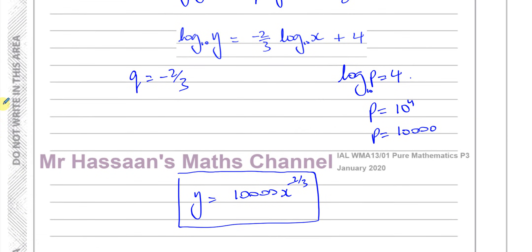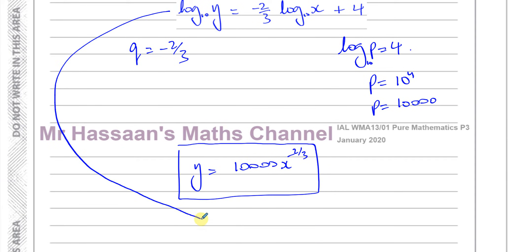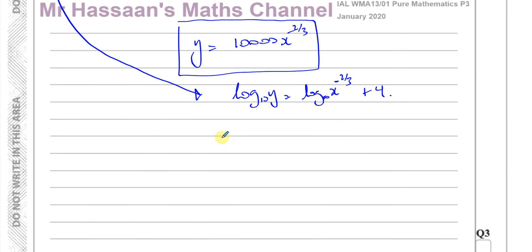We could have also taken this and rewritten this in this form. So, what we could have done is bring the logs together on one side. So, this is log to the base 10 y equals log to the base 10 x to the power of minus 2 thirds plus 4. And if we bring the logs together on one side, we can say this is log to the base 10 of y minus log to the base 10 of x to the power of minus 2 thirds equals 4. So, I could combine this using the subtraction law, division law. You'll have y over x to the power of minus 2 thirds equals 4.